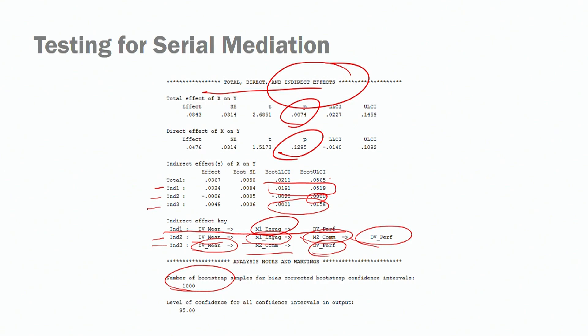We have our bootstrapping procedures with 1,000 repetitions and our confidence interval set at 95%. In this session, we talked about serial mediation models and made a distinction between serial and parallel mediation models. We emphasized that we need to adopt Model number 6 on the PROCESS macro developed by Hayes, and walked through a test of a serial mediation model. We found that the model — job meaningfulness influencing job performance via engagement first and commitment second — was not significant because 0 was in the confidence interval of this serial mediation model.